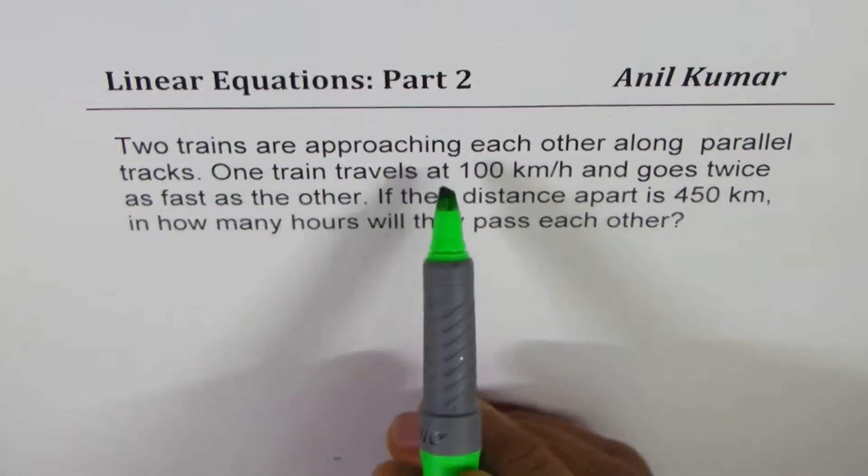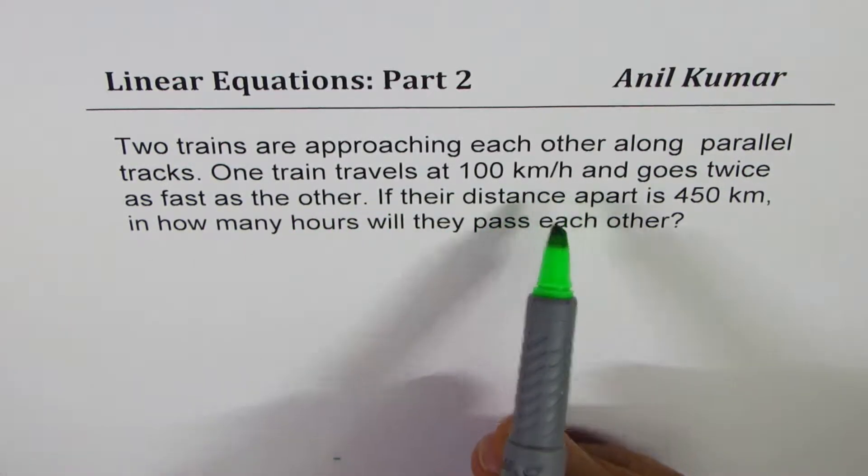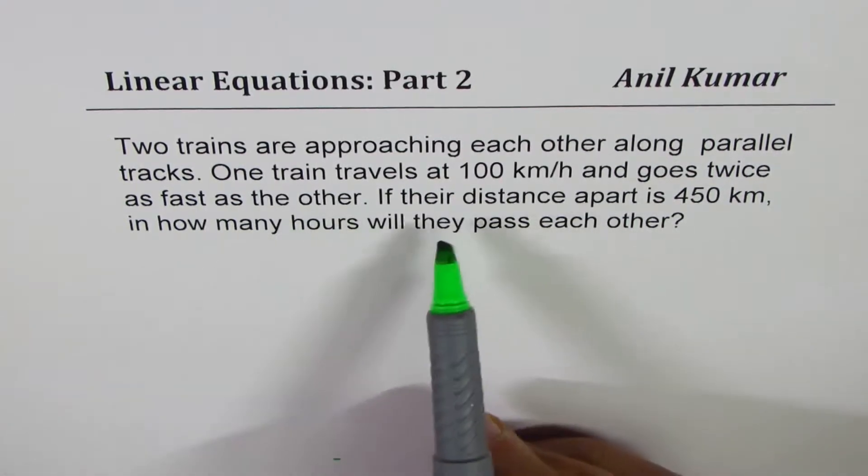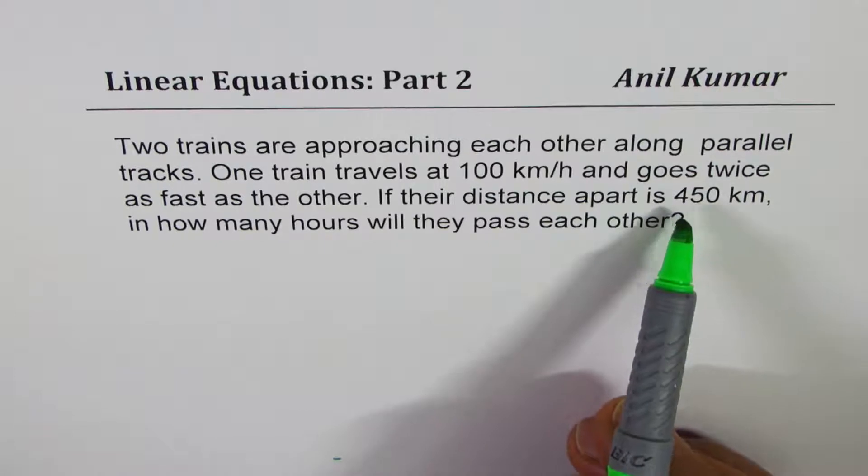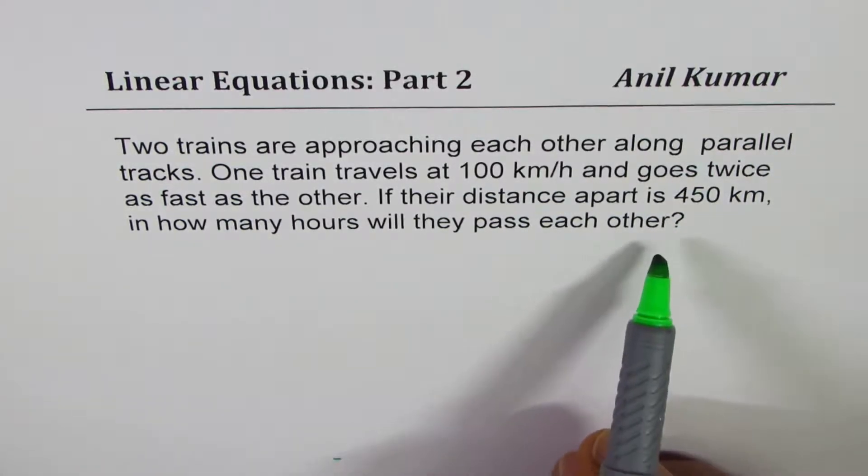Two trains are approaching each other along parallel tracks. One train travelled at 100 km per hour and goes twice as fast as the other. If their distance apart is 450 km, in how many hours will they pass each other?